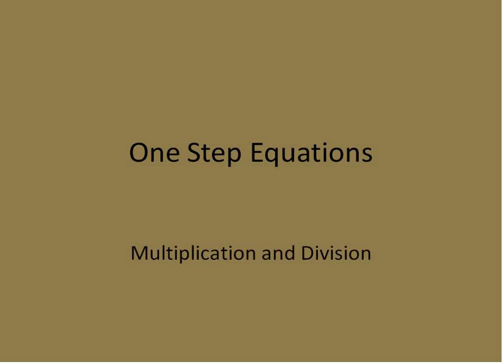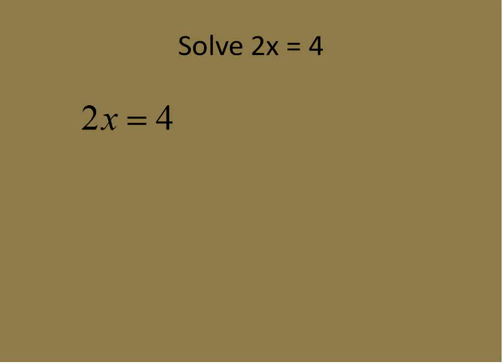Remember what we've done in previous lessons. When we're given an equation like this, 2x is equal to 4, our goal is to get x completely by itself. That's what we mean when we say solve. When you're solving an equation, you're solving for the variable. What is x actually equal to in this case?